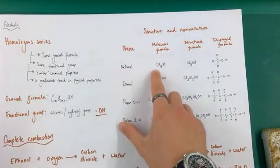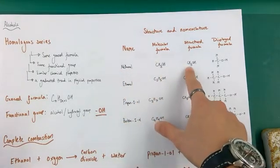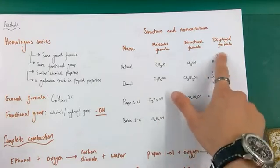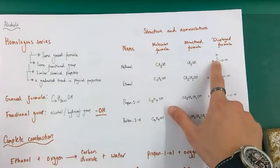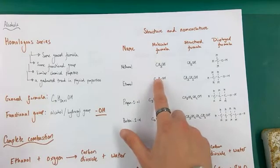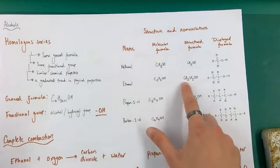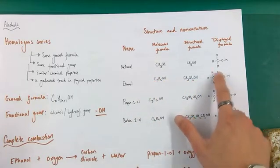We've got methanol, CH₃OH. Very simple structural formula as well, and here is my structure with all the bonds shown, three hydrogen and the carbon OH group. Ethanol, two carbons in length. Here's the molecular formula, structural formula, and displayed formula for ethanol.